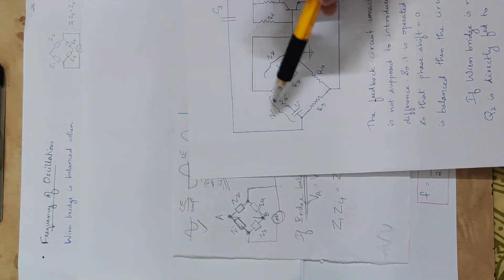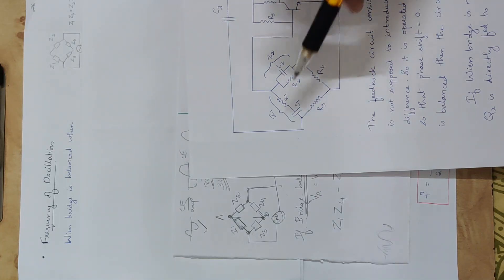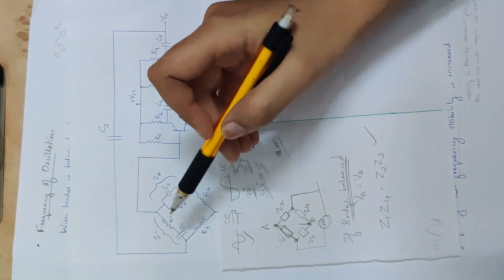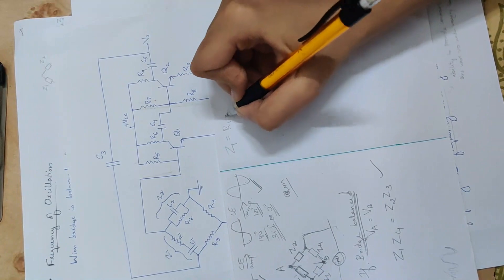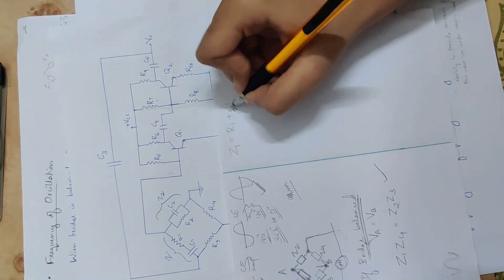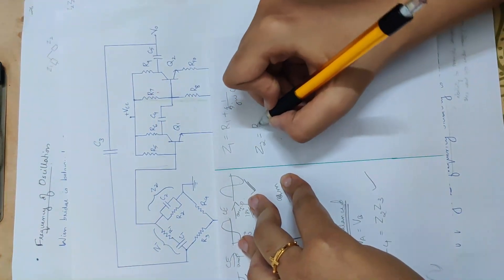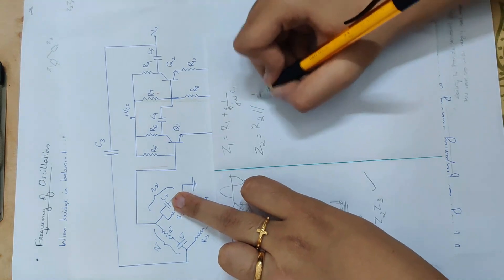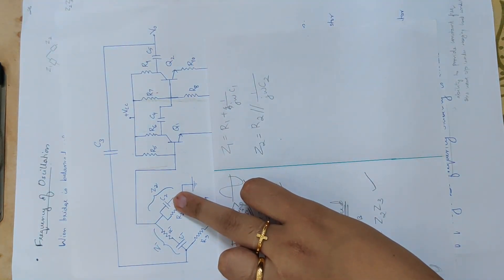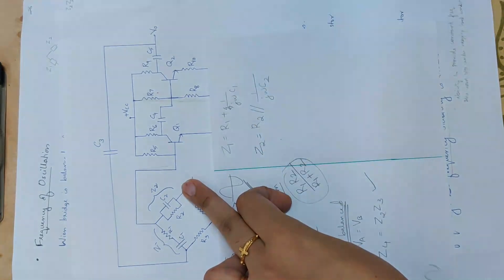Now Z1 × Z4, where Z4 = R4, gives Z1 × R4 = Z2 × R3. Z1 is R1 plus 1/(jωC1), which is the series RC impedance for arm 1.